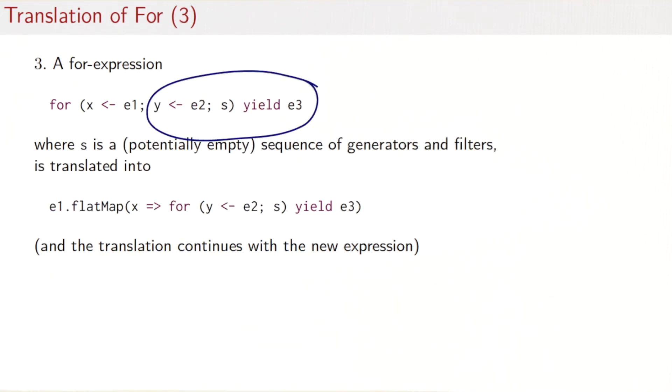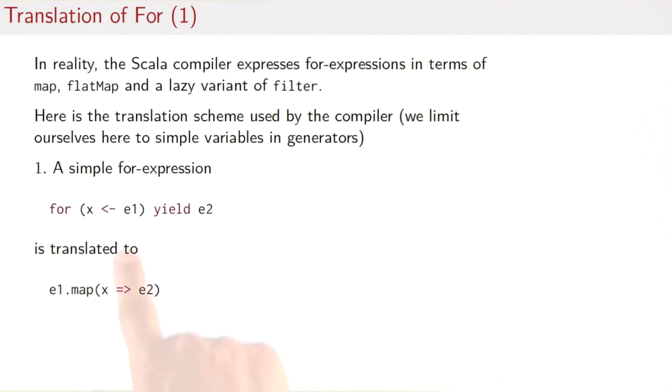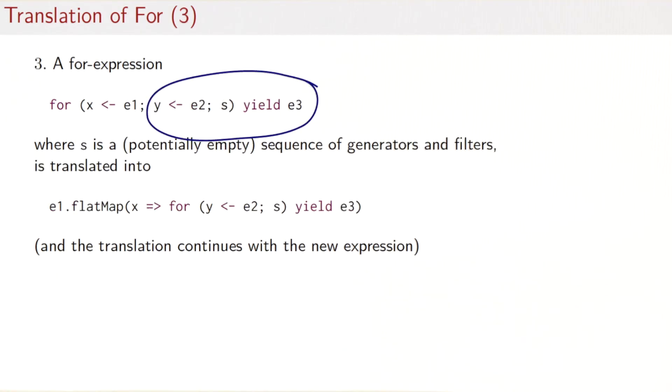This one here has a for expression, a nested for expression that now lacks the first generator. So each of these translation steps can be repeated yielding simpler and simpler for expressions until finally we must hit the simplest case and that then would translate into a map. So that's how the translation scheme works.